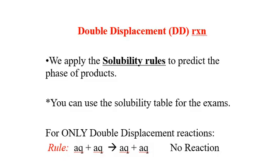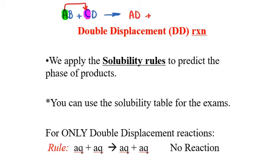Hello everyone. In this video I'm going to show you how to study double displacement reactions. Double displacement reactions have this generic pattern: AB plus CD. If we have two compounds react with each other, we call that a double displacement reaction because we are going to switch the first cation of each compound. So the products are AD plus CB.